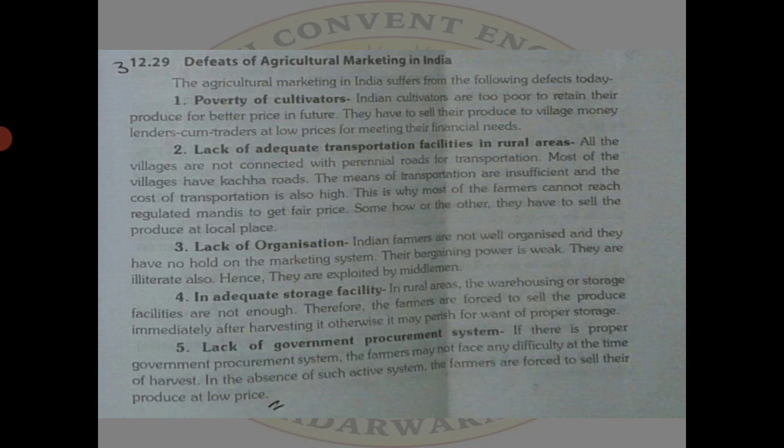Fourth is inadequate storage facilities. The number of godowns and warehouses are insufficient in localities, and if they exist they are occupied by big intermediates and big traders. Due to this, farmers do not get sufficient place to store their crops, so they are forced to make haste in selling their product.